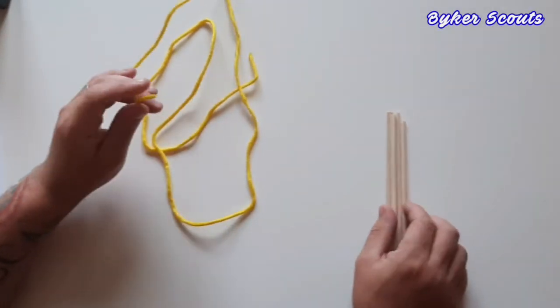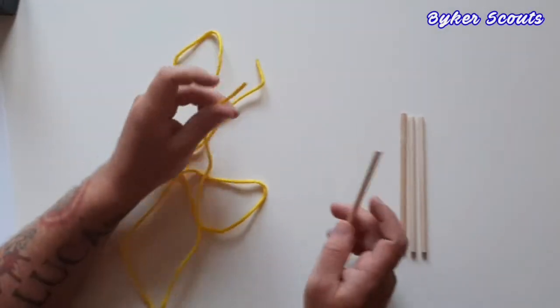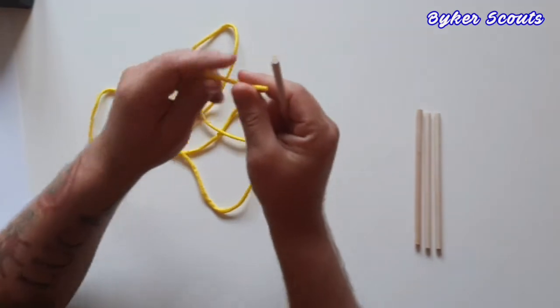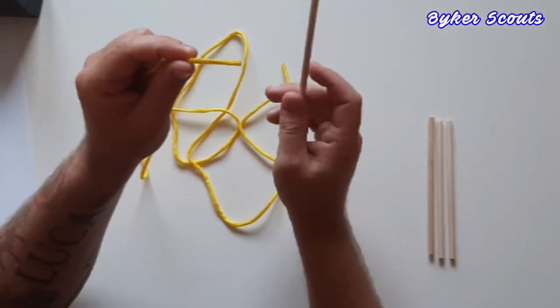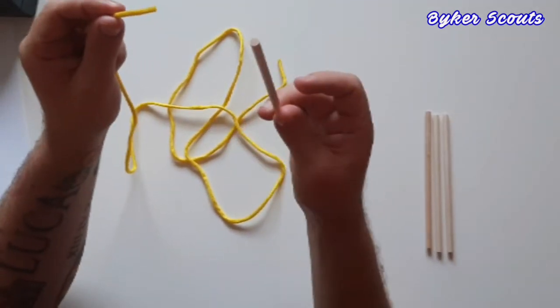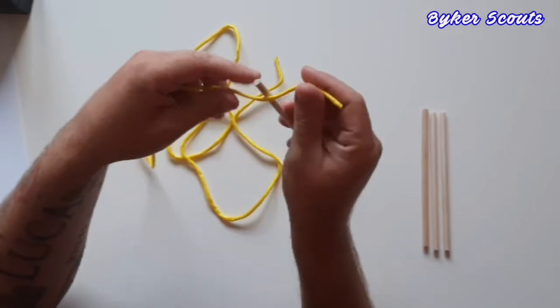So for the purpose of this video, I will be using some paracord. What you need to do is get the end of your string or paracord and one dowel and start off with a clove hitch.